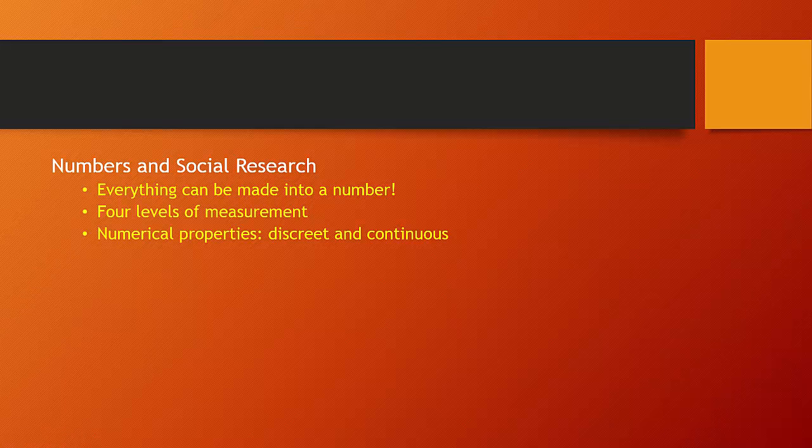To start off with, everything can be made into a number. When you assign a number to a variable or a set of numbers to the outcome of a variable, sometimes there will be a natural linkage. For example, if someone is 67 inches tall or 5'7", you understand clearly the relationship between the number and the response for the variable.